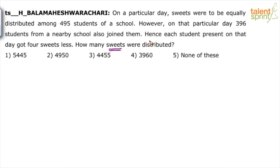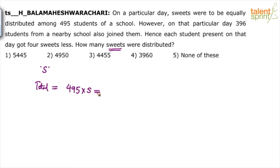Now, what would be the total number of suites? Let us assume each child would get S suites. So what would be the total number of suites? The school would buy 495 into S, because they know that there are 495 students. But on that day, 396 students from a nearby school also came. So 495 students of their own school plus 396 students from some other school.